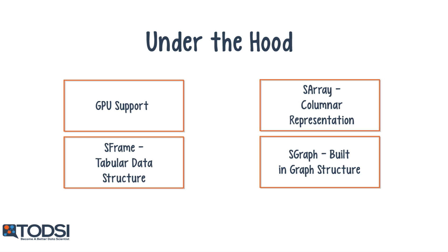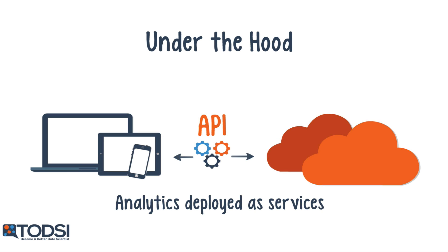An important note is that the GraphLab Create platform supports the use of GPUs. As we've previously seen, this feature is becoming increasingly important for deep learning applications. You can use the GraphLab models to build different types of predictive analytics tools, which can then be set up as services. These services can be accessed programmatically through an API on your computer or mobile device. The information on GraphLab's website is a bit limited, so you may have to sift through the API documentation to see if the platform is a good fit for your project.